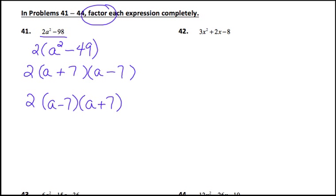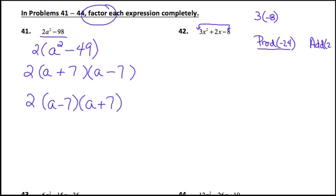Number 42 is a little more problematic in that it doesn't have a greatest common factor and it's a trinomial. I've shared a method in previous videos to do this problem where you do not have to guess and check — it's a strict, always-works method. It involves taking the coefficient of the x squared term, which is 3, and the constant, which is negative 8, and multiplying those together. 3 times negative 8 is negative 24. So I want two numbers whose product is negative 24 and whose sum is the middle term, which is 2.